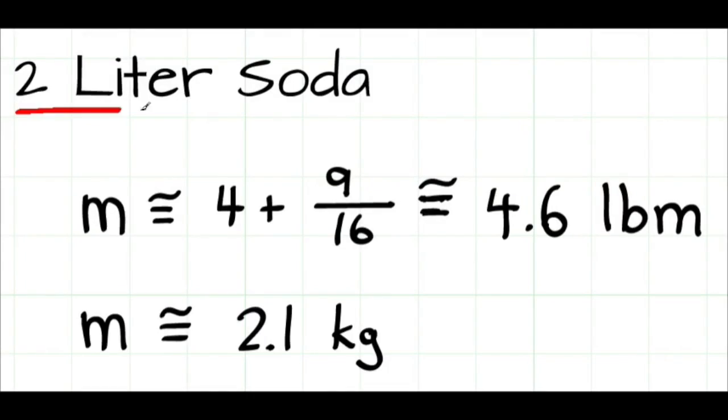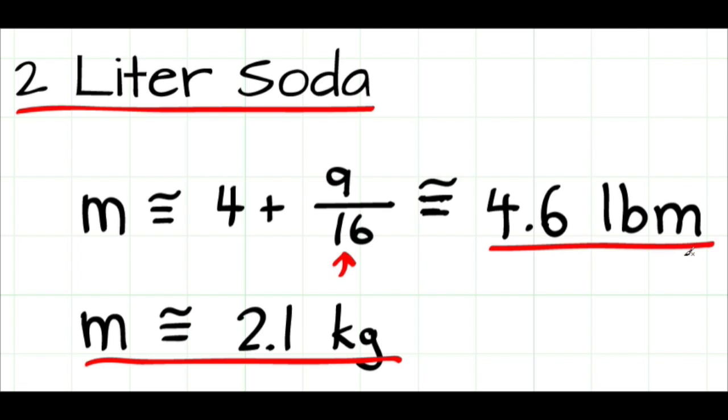So for a 2-liter soda bottle, the mass is about 2.1 kilograms. In English units, there's 16 ounces in a pound. So if I take 9 over 16, add that to 4, I can see the mass in English units is about 4.6 pounds mass.